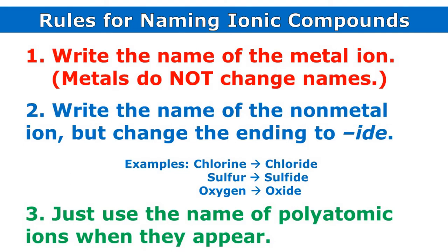Naming ionic compounds is pretty simple. First, we'll just write the name of the metal ion. We don't have to worry about changing the name of the metal. Then we will write the name of the non-metal ion but we'll change the ending to '-ide.'